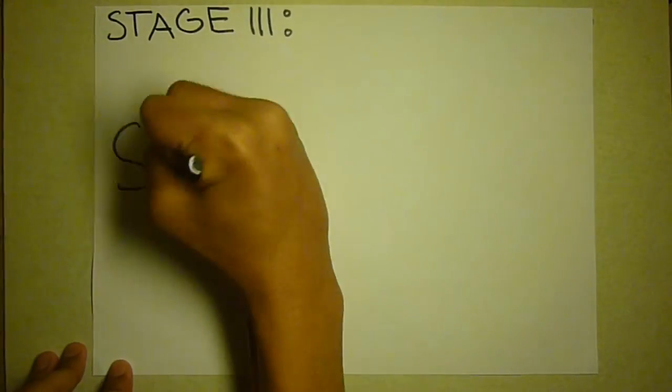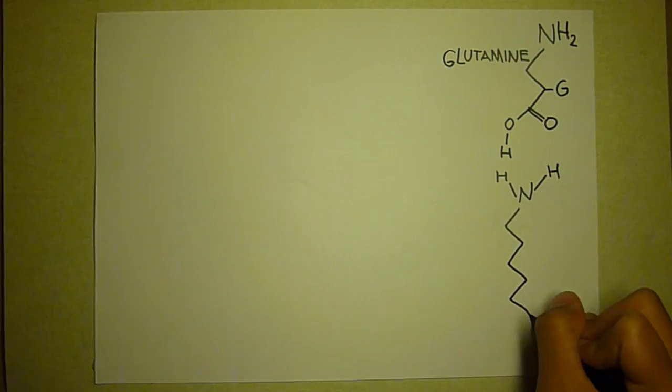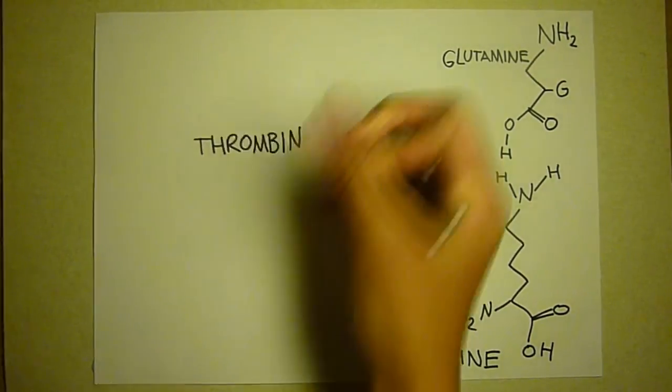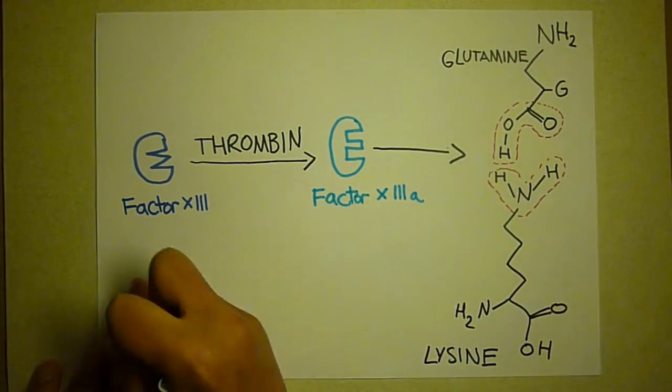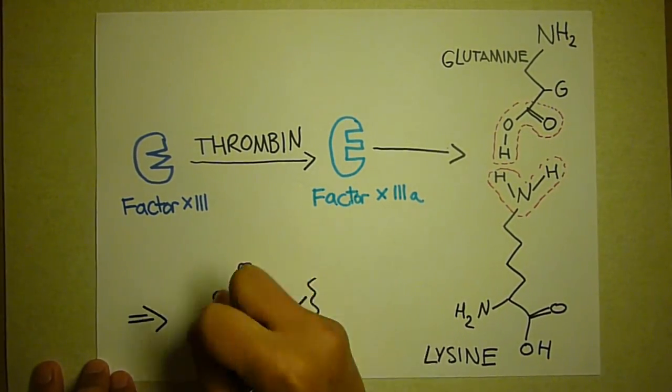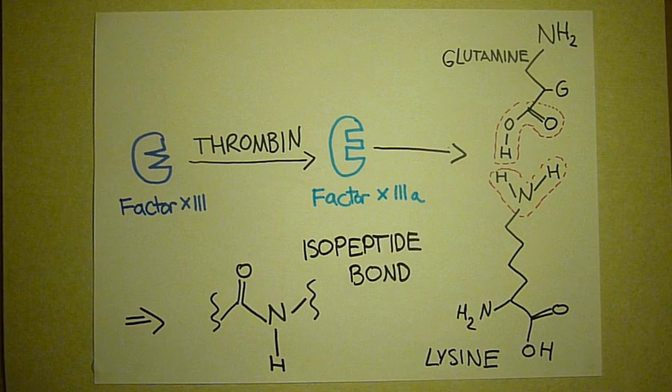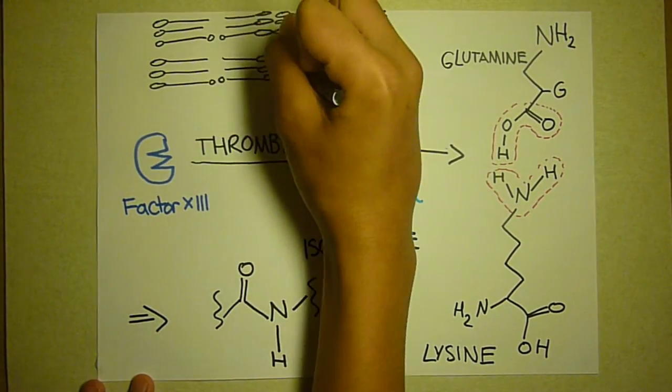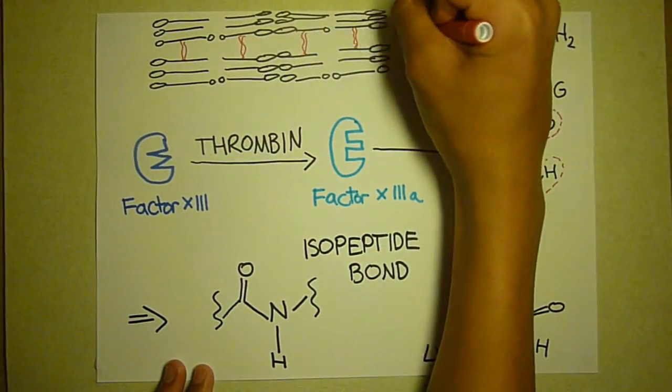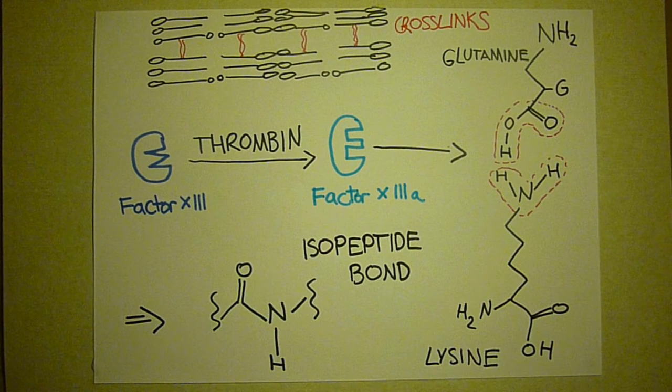Stage 3: stabilization. The primary sequence of fibrin contains glutamine and lysine amino acids. Thrombin can activate an enzyme called factor X3 and transform it into another enzyme called factor X3A. This covalently bonds the carboxyl group of the glutamine and the amine group of the lysine to form an isopeptide bond. On a macromolecular scale, these cross-links between the fibrin proteins cause the entire clot to become rigid and stable from any mechanical or chemical stress. This increases the degree of the occlusion and damage to the artery.